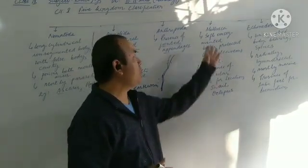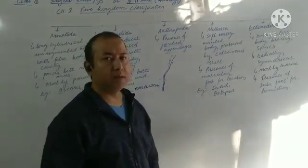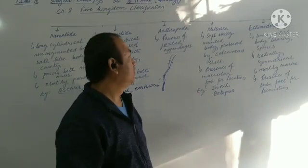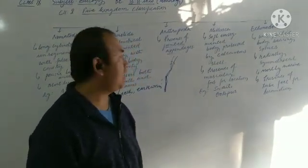Whenever you write the characteristics of mollusca, visualize snail. Snail. The body is soft, unsegmented, and the body remains protected by calcareous shells.